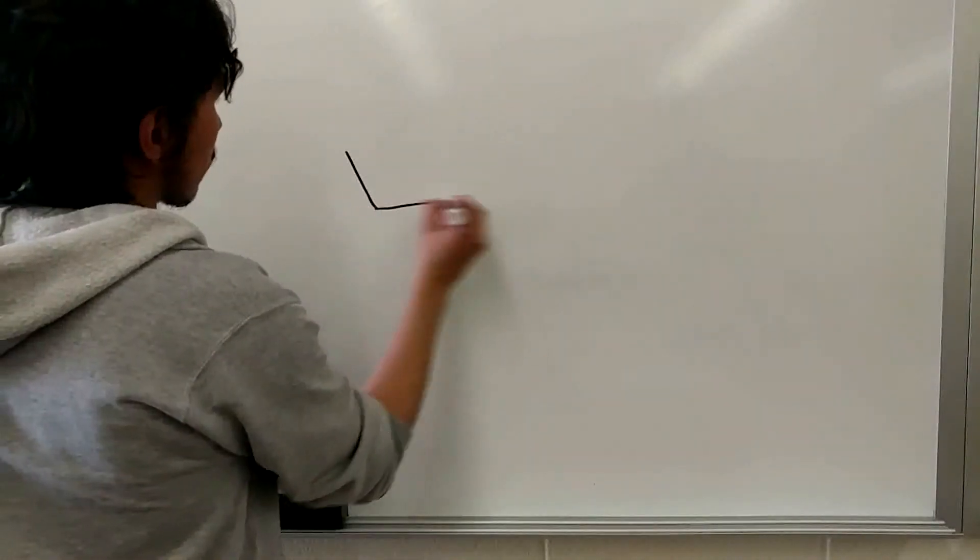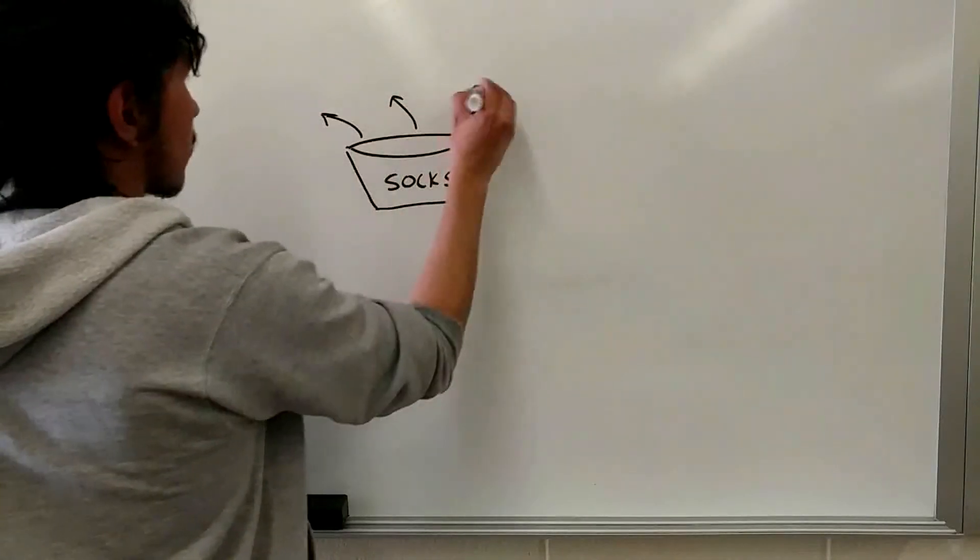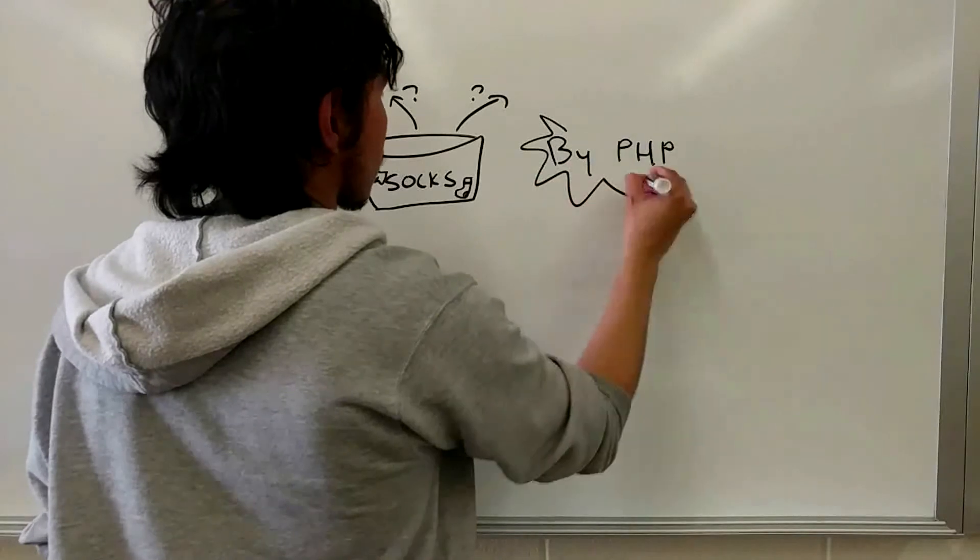Say we have a box full of socks of three different colors. We are in a dark room and we want to know the minimum amount of socks that we need to take out in order to get a pair.